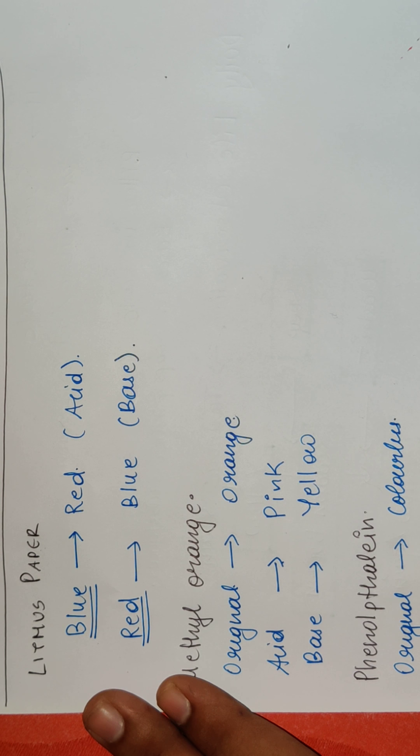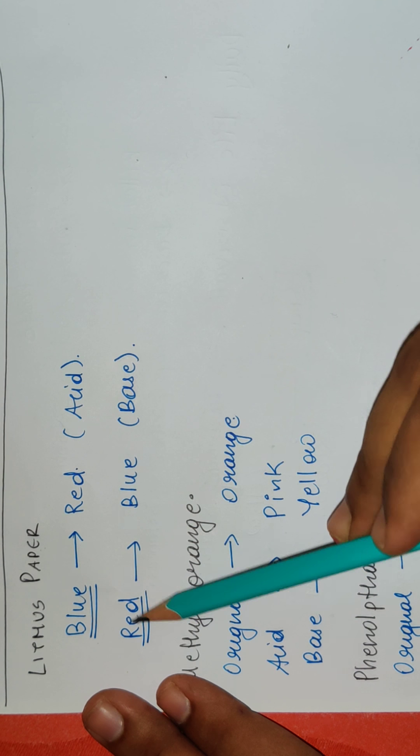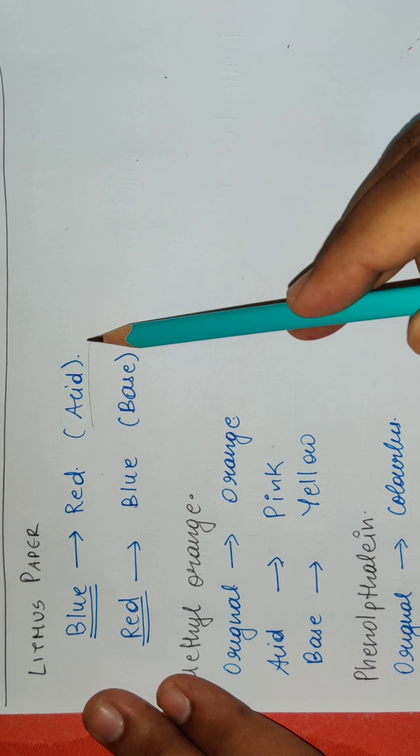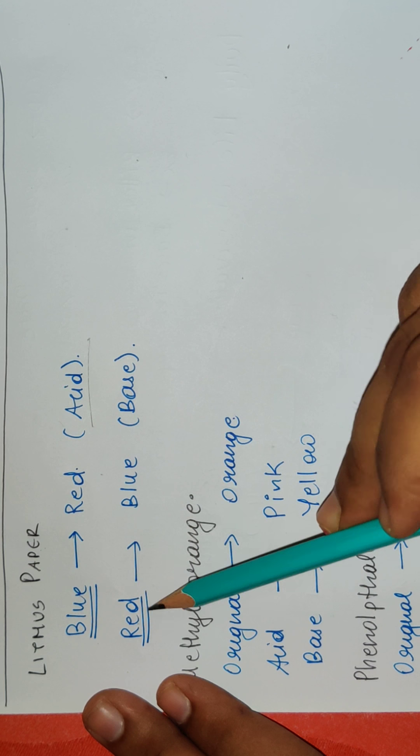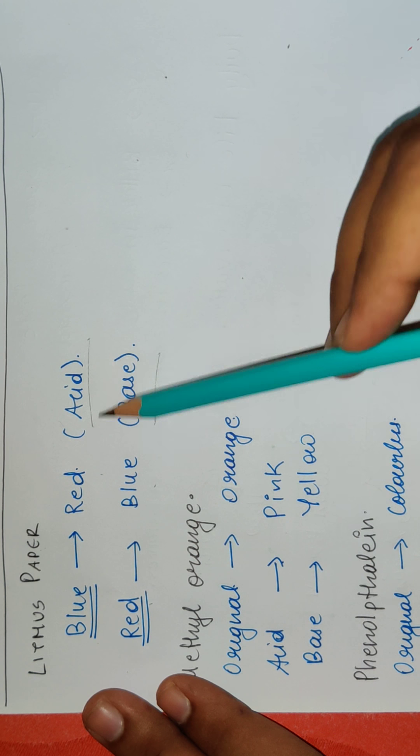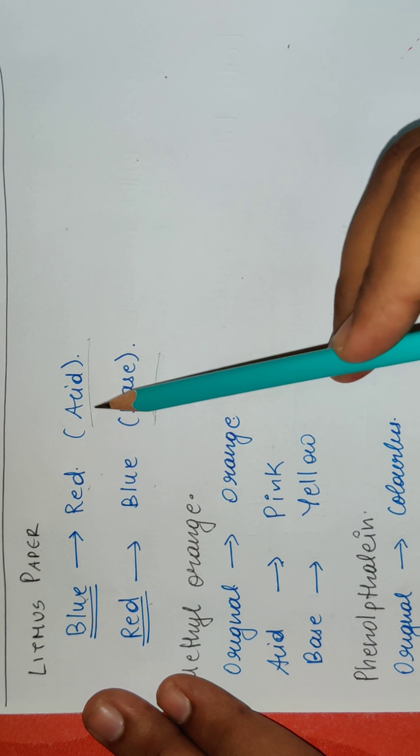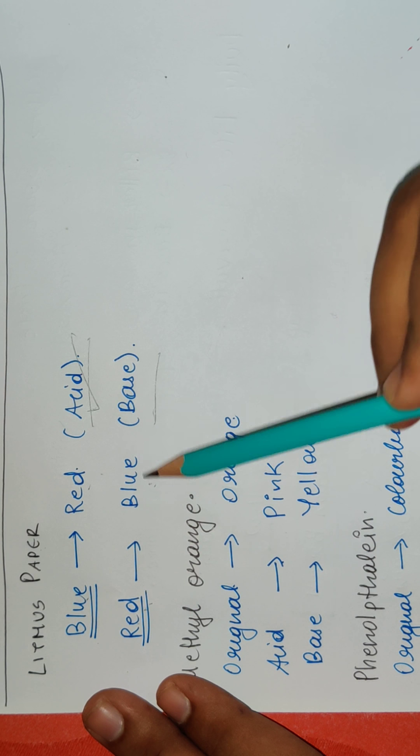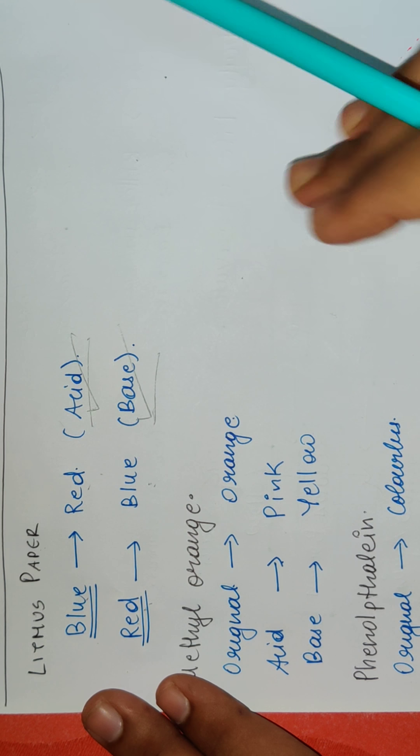As you previously saw, we have indicators. For example, we have litmus paper as an indicator. So what is the property of litmus paper? Blue litmus changes to red color when present in the form of an acid. And red litmus changes its color to blue when it is present in the form of a base. So when it is blue to red, it is acid.